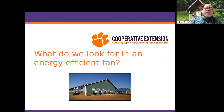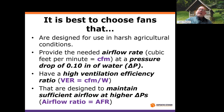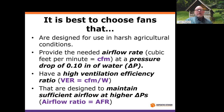So the key question is: what do we look for in an energy efficient fan? There are four basic things. The first is we want equipment designed for use in harsh agricultural conditions — high ammonia and high moisture can be tough on electrical equipment. The good news is that most major ag fan manufacturers are already taking care of us on that, typically using the right materials. There are a few that aren't, but all the major ones are.